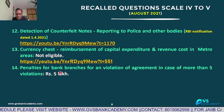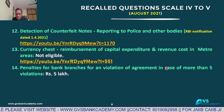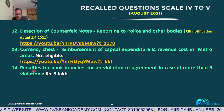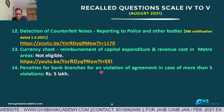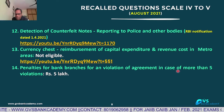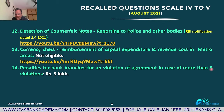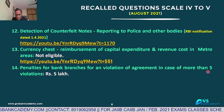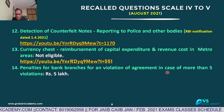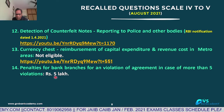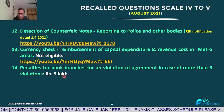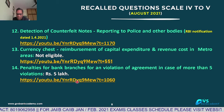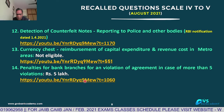Q14: Penalties for bank branches for violation of agreement with RBI in case of more than 5 violations. If a bank continuously violates the agreement more than 5 times, the penalty is ₹5 lakhs. The first violation attracts ₹10,000. In addition to the ₹5 lakh penalty for more than 5 violations, the bank must separately disclose this on its website.